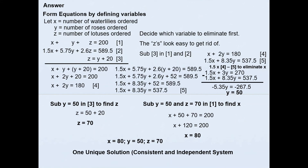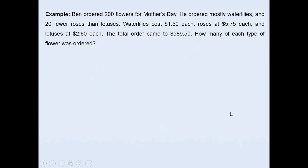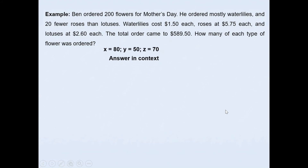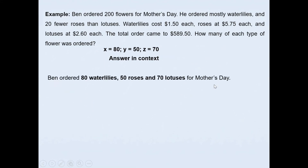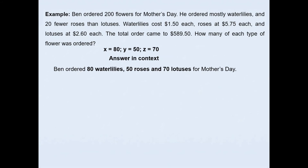This system has one unique solution, meaning it is consistent with independent equations. Answering in context: Ben ordered 80 water lilies, 50 roses, and 70 lotuses for Mother's Day. Geometrically, this means the three planes have a single common intersection point. Try pausing the video and solving it yourself to check your answer.